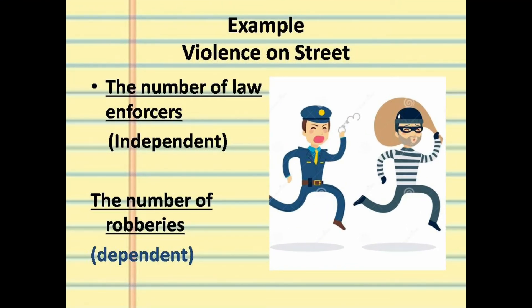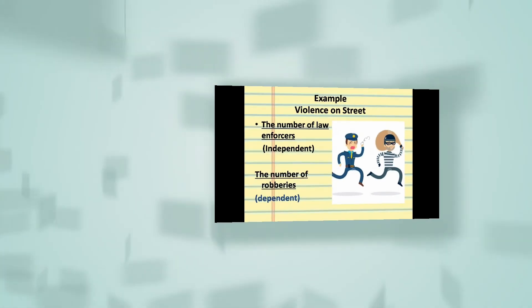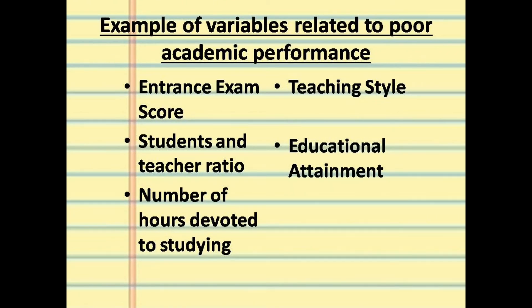For violence on the street: the number of law enforcers is the independent variable — it affects the number of robberies. If there are many enforcers, robberies may decrease; if there are fewer enforcers, robberies may increase. The dependent variable is the result — the number of robberies. Another example involves variables related to poor academic performance: entrance exams, student-to-teacher ratio, number of hours devoted to studying, teaching style, and educational attainment.